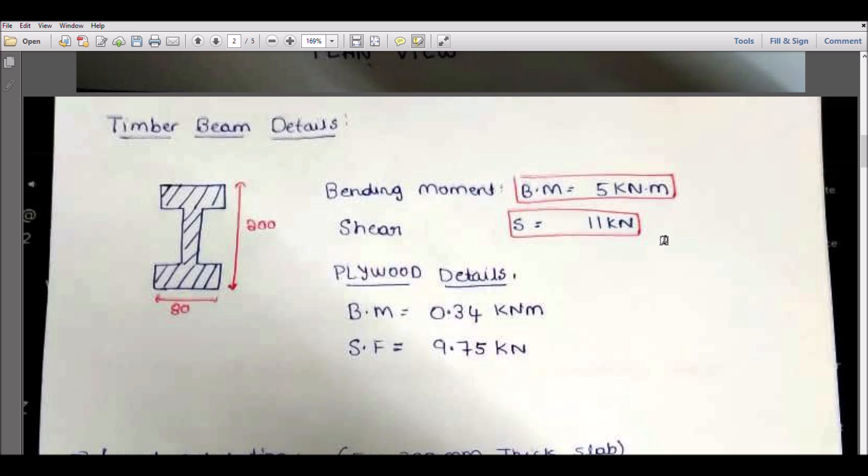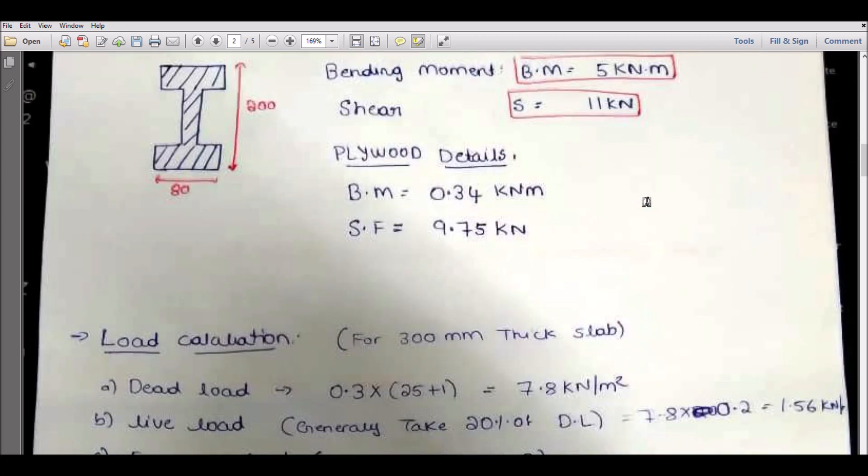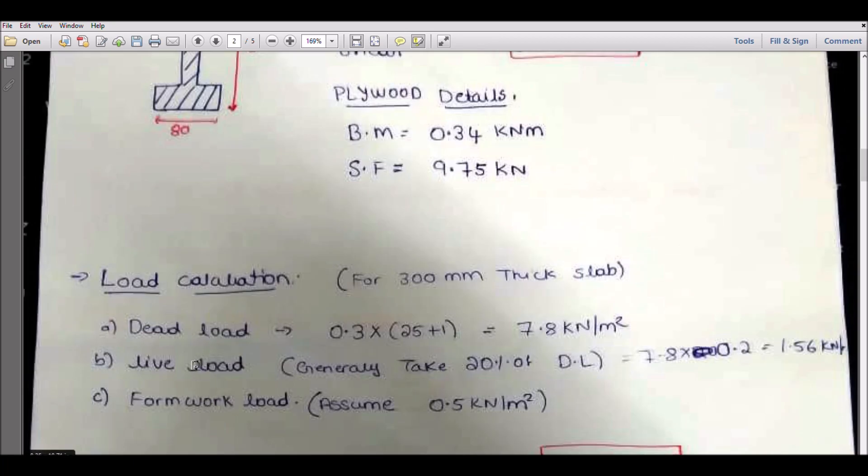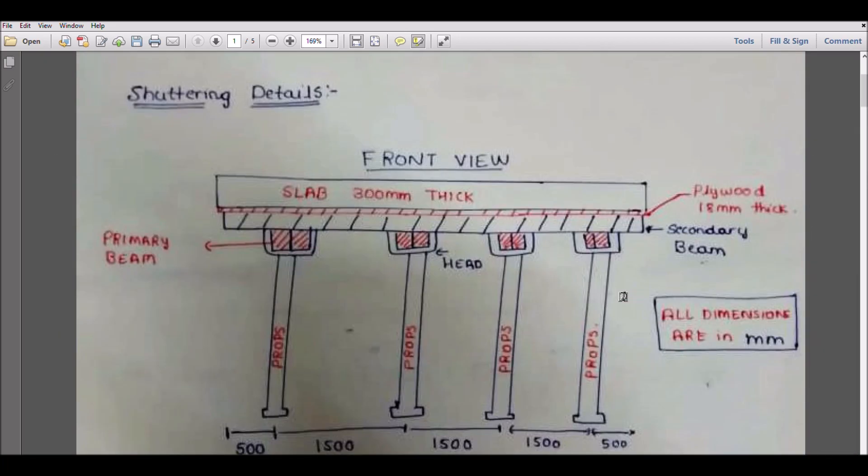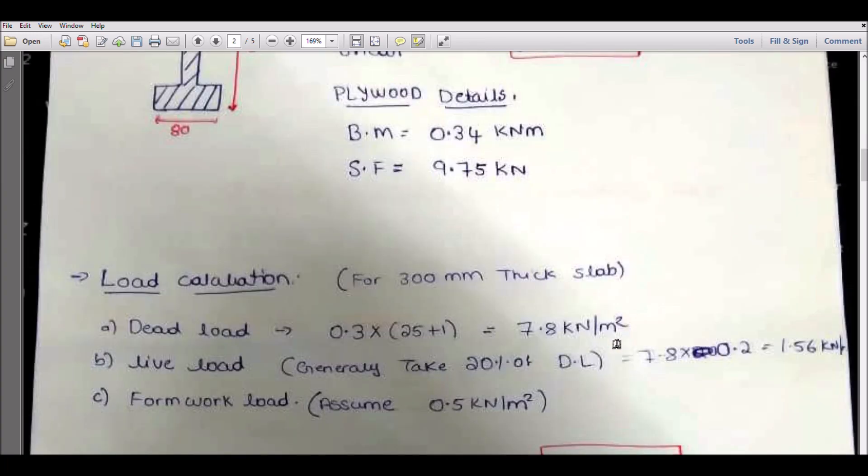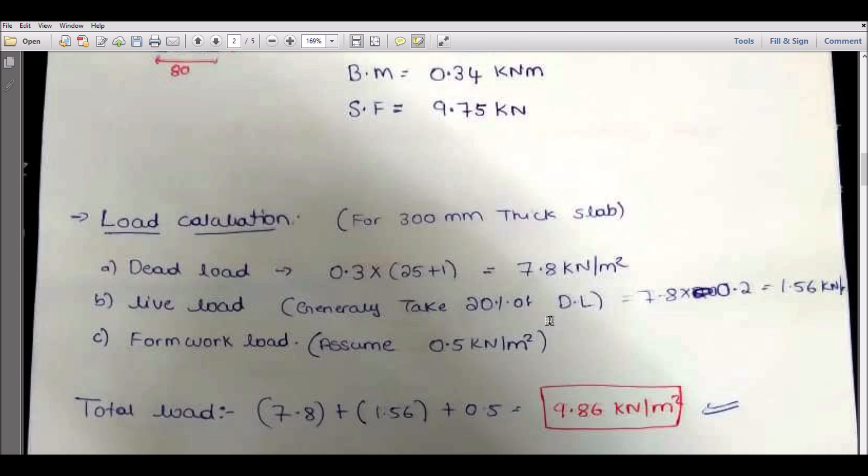Let's go to the load calculation. First, 0.3 is the 300mm thick slab, so 0.3 times 25 is the RCC density, plus 1 we are taking because when we pour the concrete, some small layer of water will be formed. For safety, we are taking plus 1 as a load. So it will be 0.3 into 26, which is 7.8 kN per meter square.